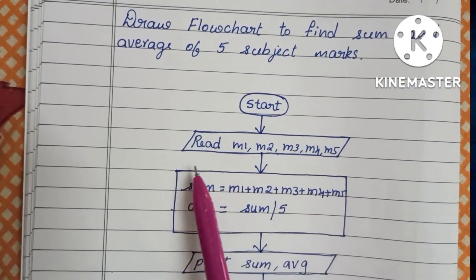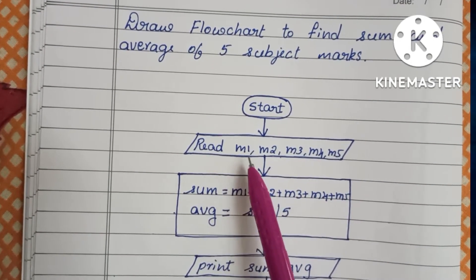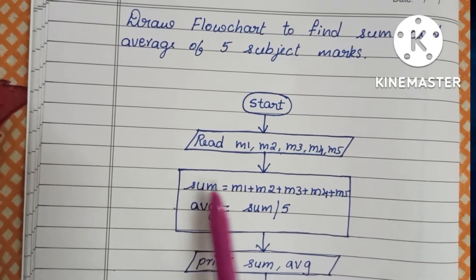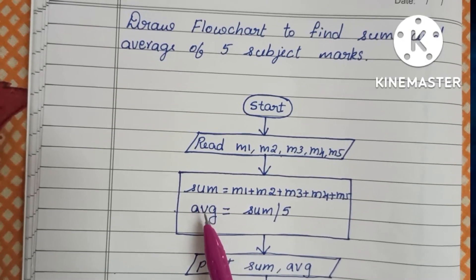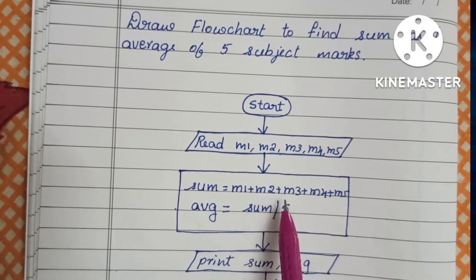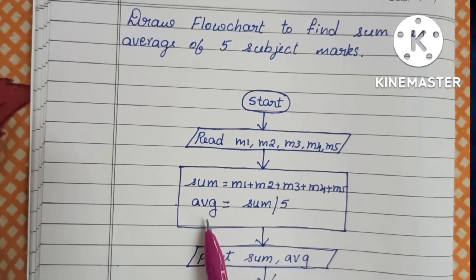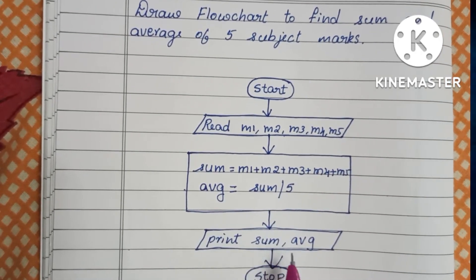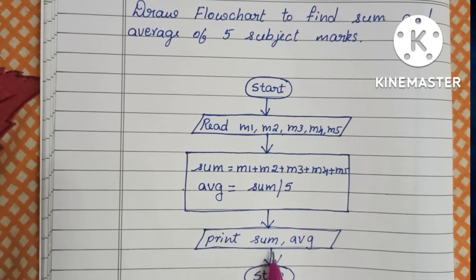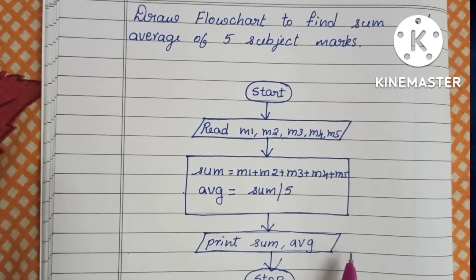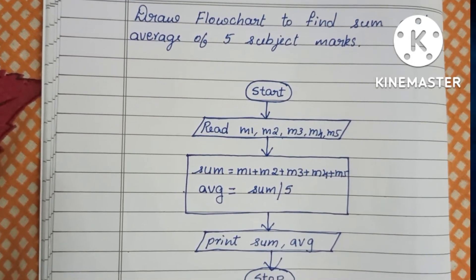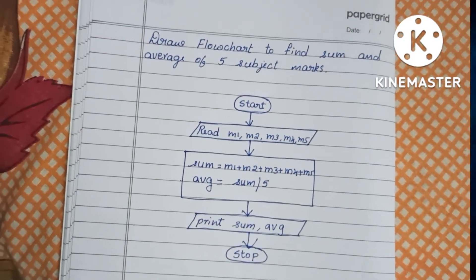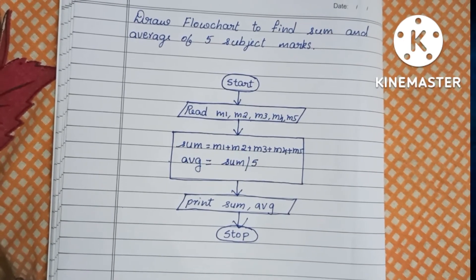To recap: the flowchart starts with the start statement, then we read five subject marks m1, m2, m3, m4, and m5. Next we calculate sum = m1 + m2 + m3 + m4 + m5, and average = sum / 5. Finally we print the output — sum and average — in a parallelogram shape, then stop the flowchart using the stop statement.